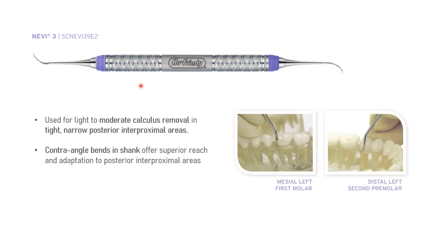Navy 3 is used for light to moderate calculus removal in tight and narrow posterior interproximal areas where the scaler won't go inside. It has contra-angle bends in the shank which help it reach the areas below the contacts and remove interproximal calculus.